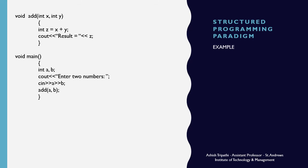Here is an example of the structured programming paradigm. We have created a function named 'add' which receives two integer parameters x and y. It performs the addition of these two variables and stores the result in variable z, then prints the result on the screen. This function is called by the main function. A program always starts from the main function. In the main function, we take two numbers a and b from the user, and then pass them as parameters to the function 'add' so that it can perform the addition and display the result.